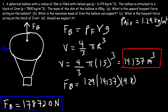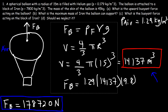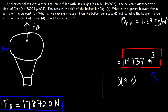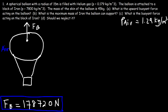Now let's move on to Part B: what is the maximum mass of iron the balloon can support? We need to draw a free body diagram. We have the weight of the iron metal, the weight of the helium gas in the balloon (W_He), and the weight of the skin of the balloon (W_b).